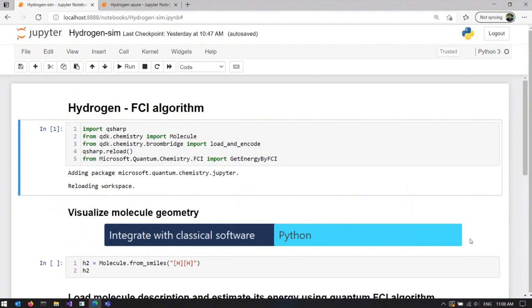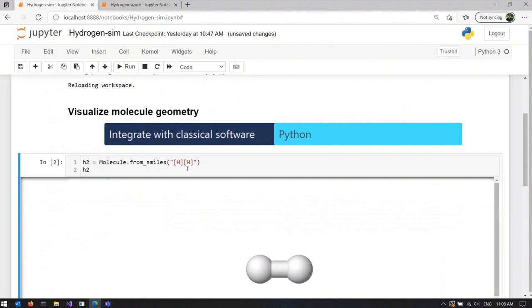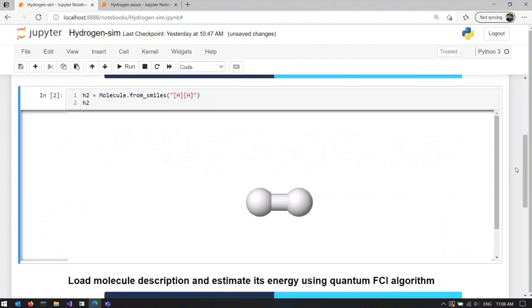We start, of course, by loading some libraries, which I have already done beforehand. Now we can use our classical software tools to do things such as visualizing the geometry of the molecule. So far nothing quantum happened, but taking advantage of existing tools can be really convenient for us.